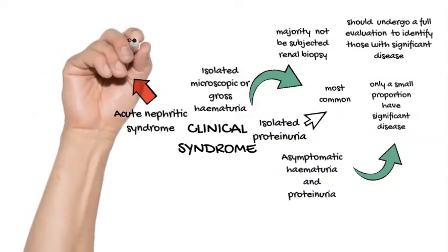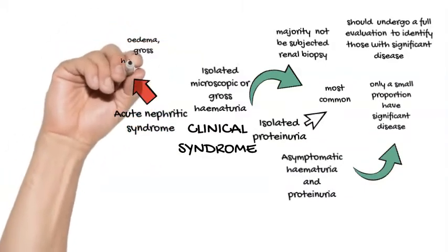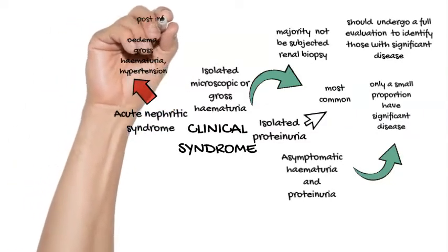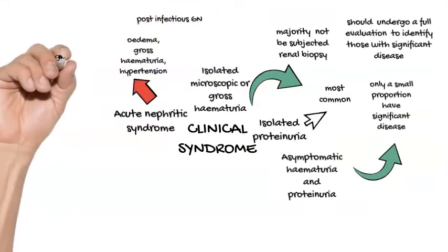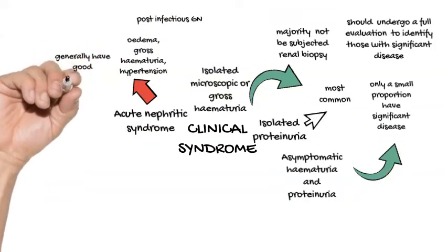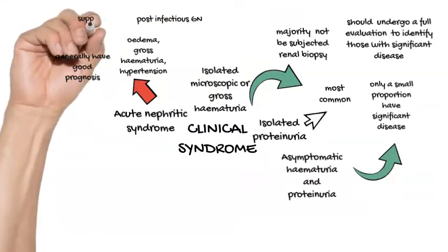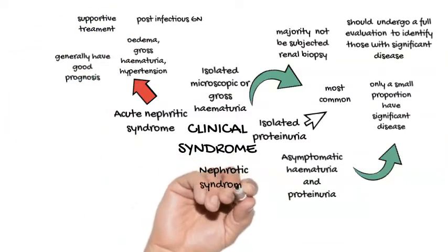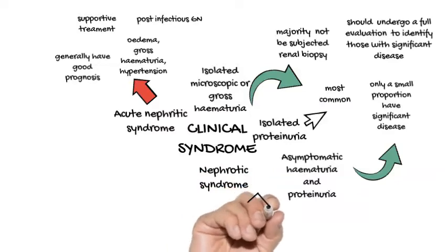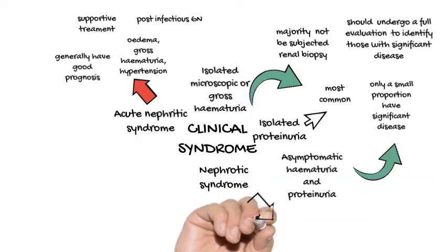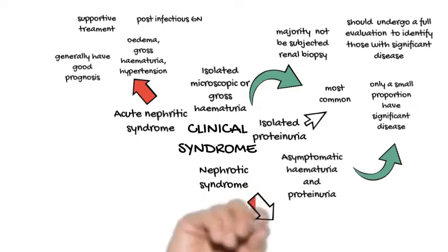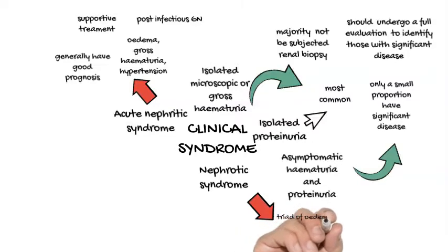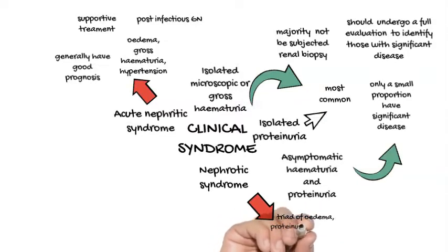Nephrotic syndrome. Patients with nephrotic syndrome present with the classical triad of edema, proteinuria of more than 3 grams per day, and hypoalbuminemia at less than 30 grams per liter. Primary glomerulonephritis is the most common cause of this condition. Secondary glomerulonephritis can cause nephrotic syndrome as a result of kidney involvement from autoimmune diseases like SLE, cryoglobulinemia, and thyrotoxicosis. Drugs are also a possible secondary cause, for example gold, penicillamine, captopril, and non-steroidal anti-inflammatory drugs.